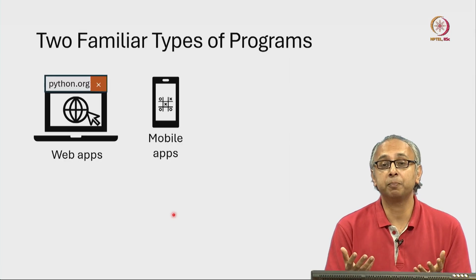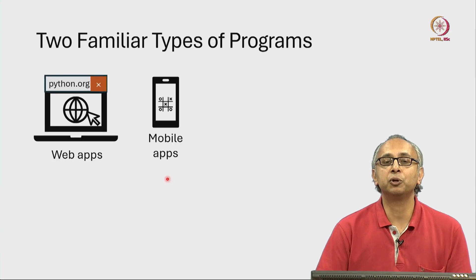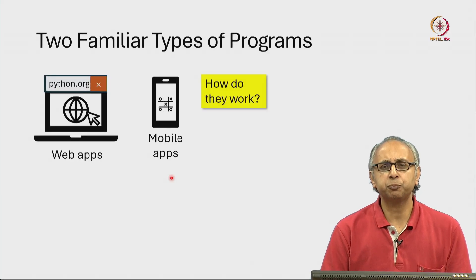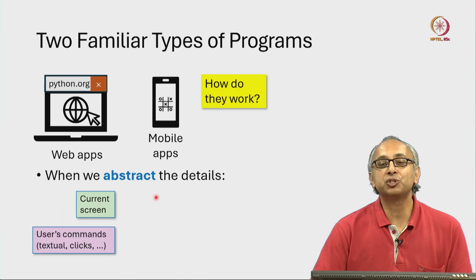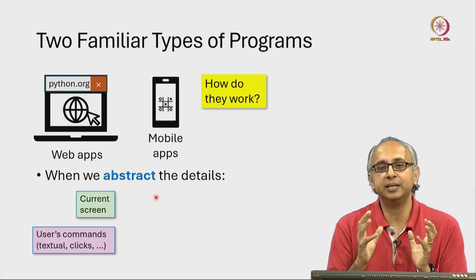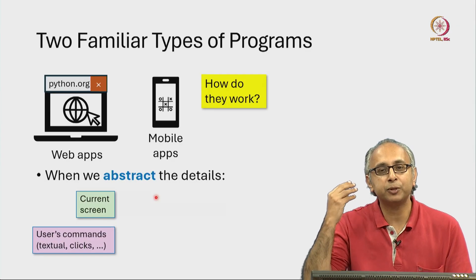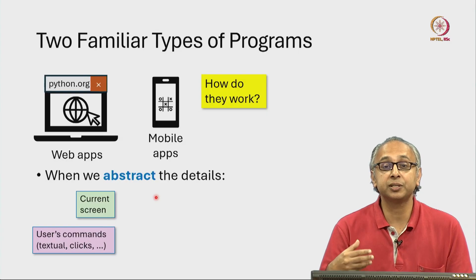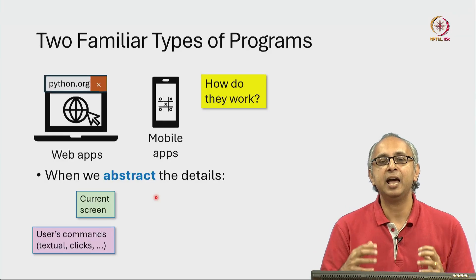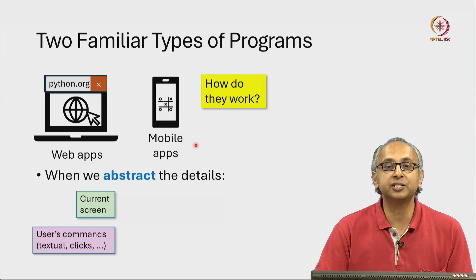These programs are very complex. You have all used web applications and you have all used mobile applications. If we were to try and understand how these complex programs actually work, that would be a difficult task. We have earlier introduced this terminology of abstraction — the idea is to take something complex and try to think about it in simple terms. Basically, come up with a simple mental model that captures the most interesting things about this complexity, and come up with a very simple but high-level abstract representation of these complex programs.